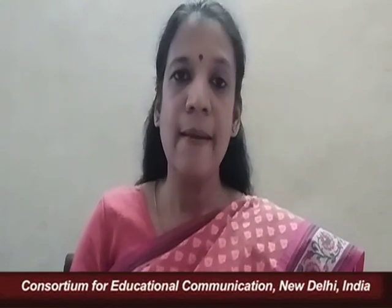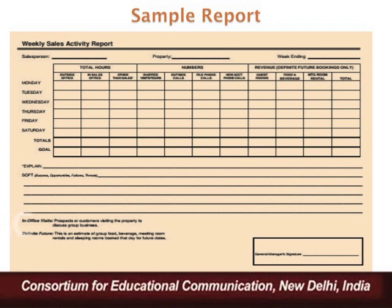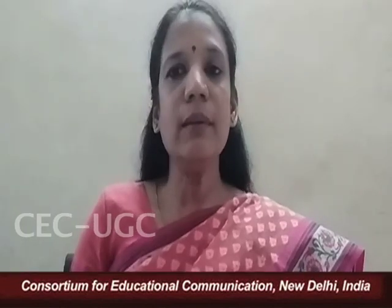Sales reports are generally prepared on a periodic basis, and the periodicity — the specified period for which you are making the report — depends on the needs of the business entity. Accordingly, you can generate reports on a daily, weekly, quarterly, or annual basis. A weekly activity report tells the company about the activities being carried out by a salesman during the week.